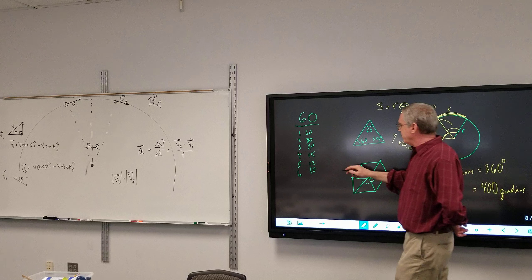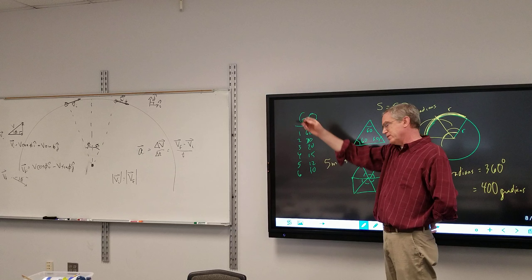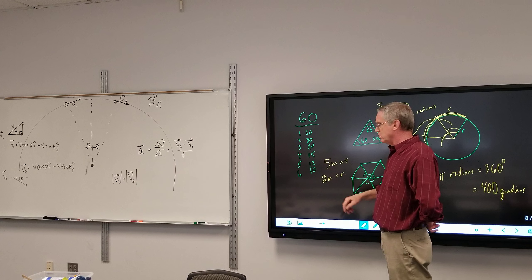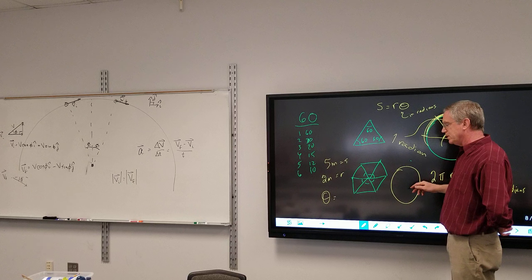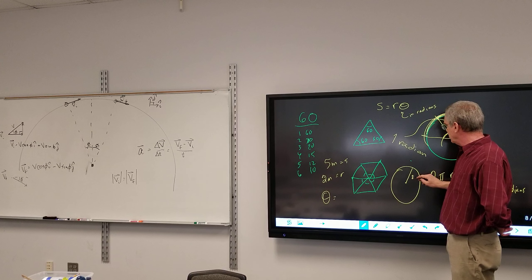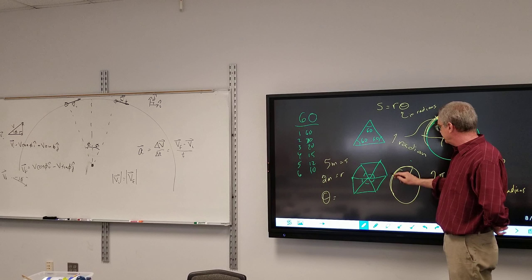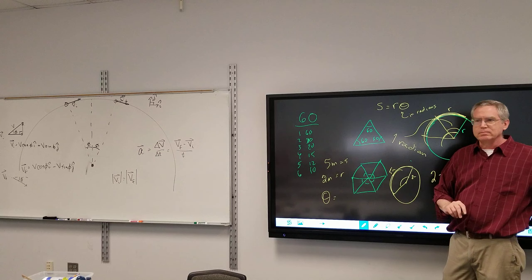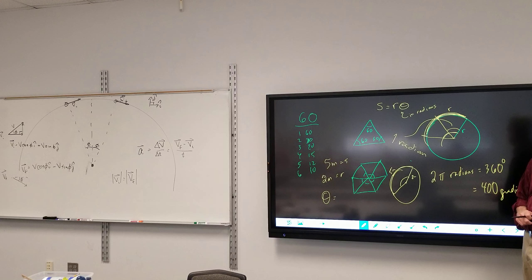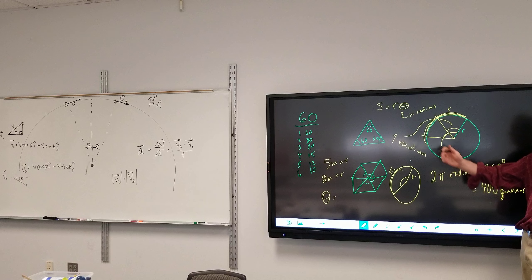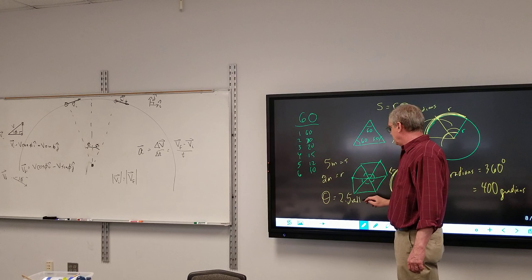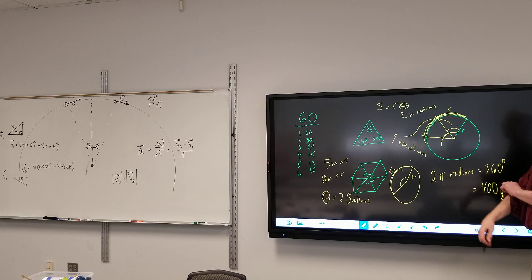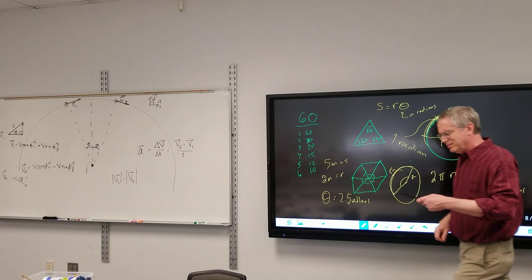So if I have an arc length of 5 meters — that's the distance around the outside — and a radius of 2 meters from the center to the edge, what angle would be subtended? Drawing a circle with a radius of 2 meters and having gone around the edge 5 meters — using the formula, the angle is two and a half radians.